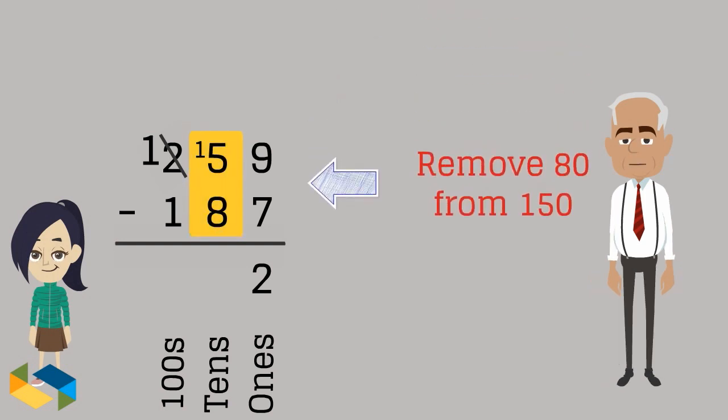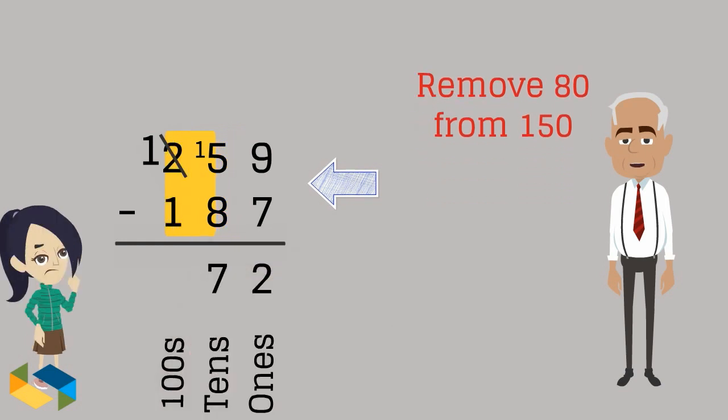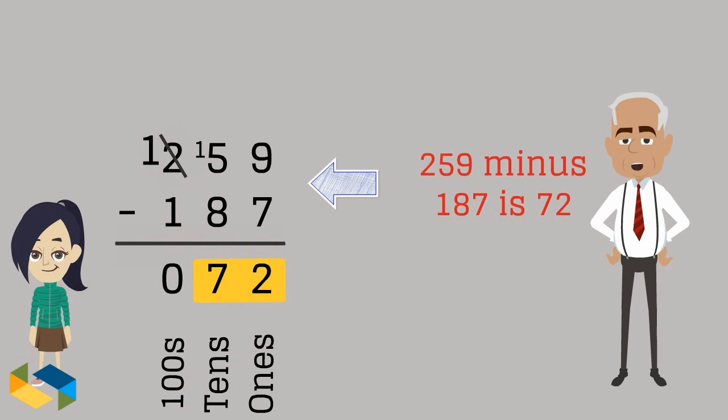So we solve 150 minus 80 to get 70. So we write a 7 here in the tens place. So 259 minus 187 is 72.